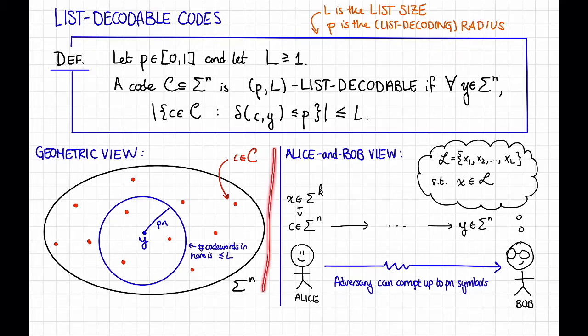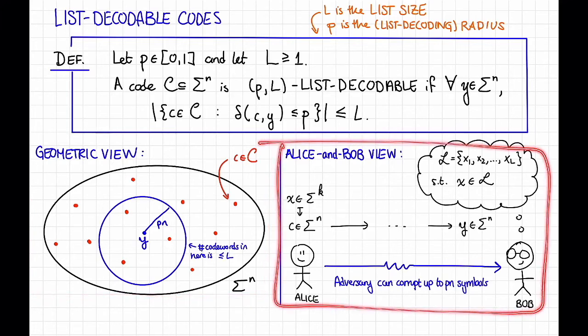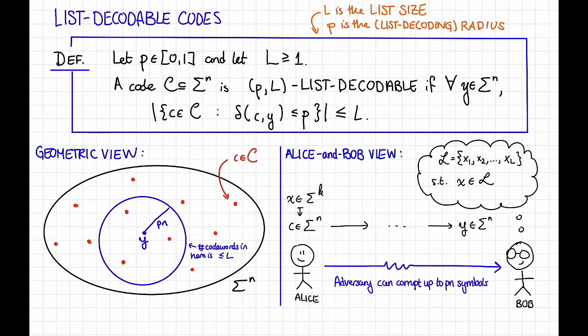Notice that this geometric view here implies the Alice and Bob view, at least combinatorially if we're not asking for efficient algorithms. That's because if Bob looks at his received word here, he can construct this list curly L by just taking all of the at most L points that live within radius P of that received point Y.